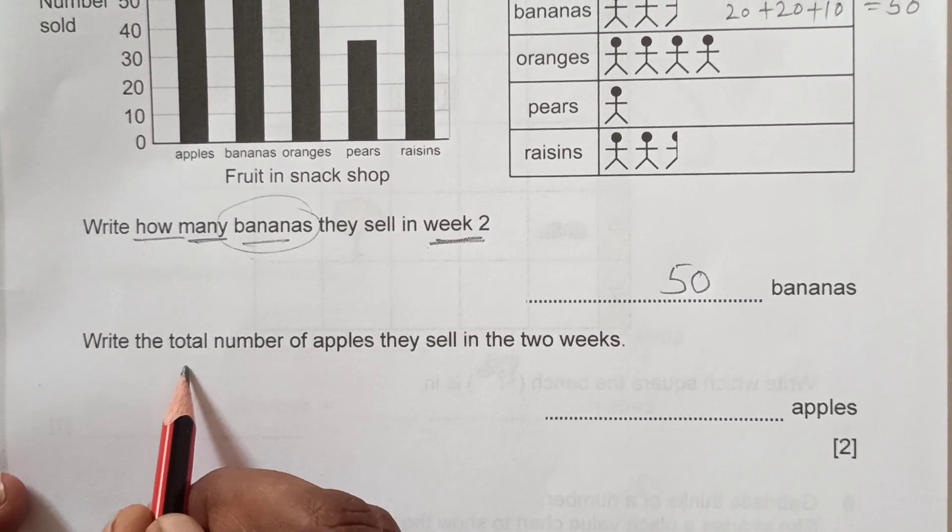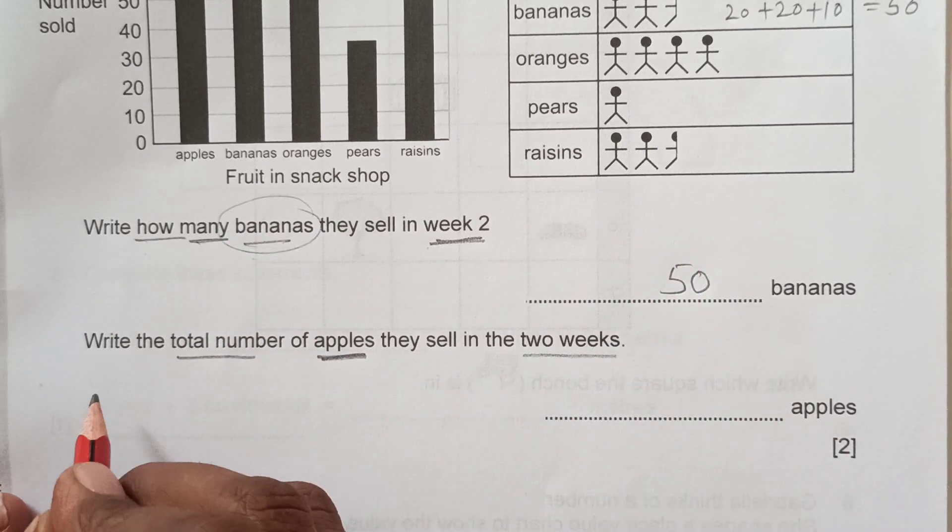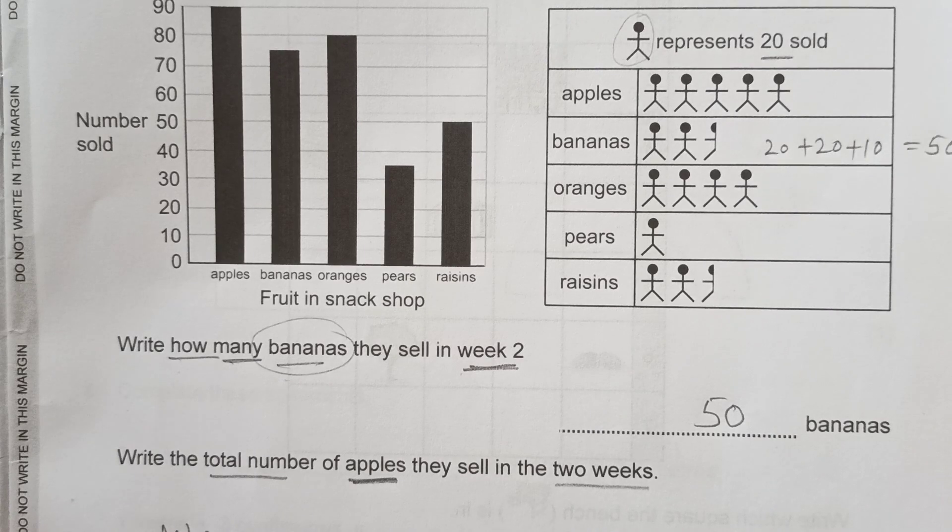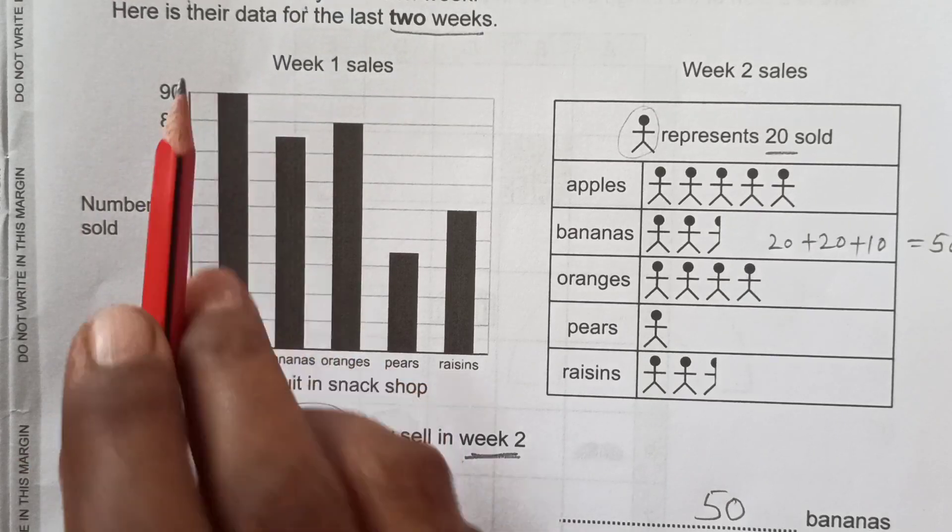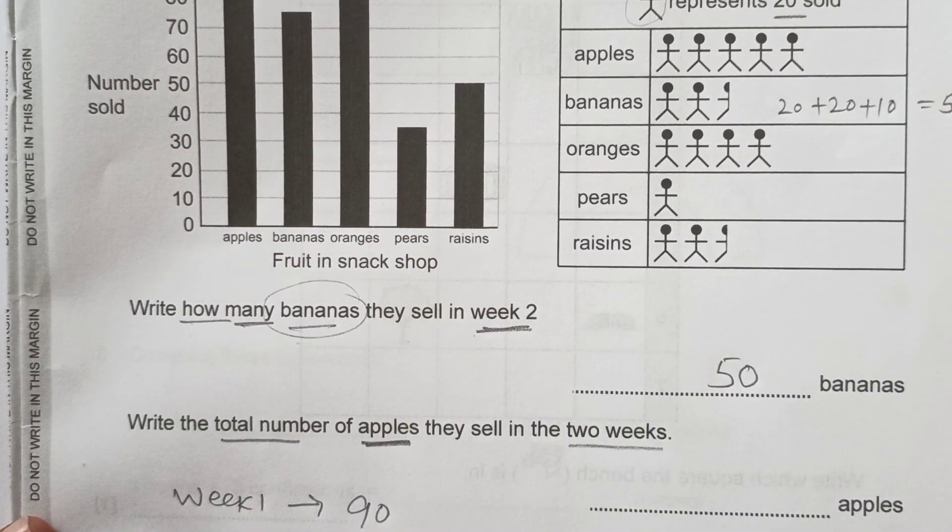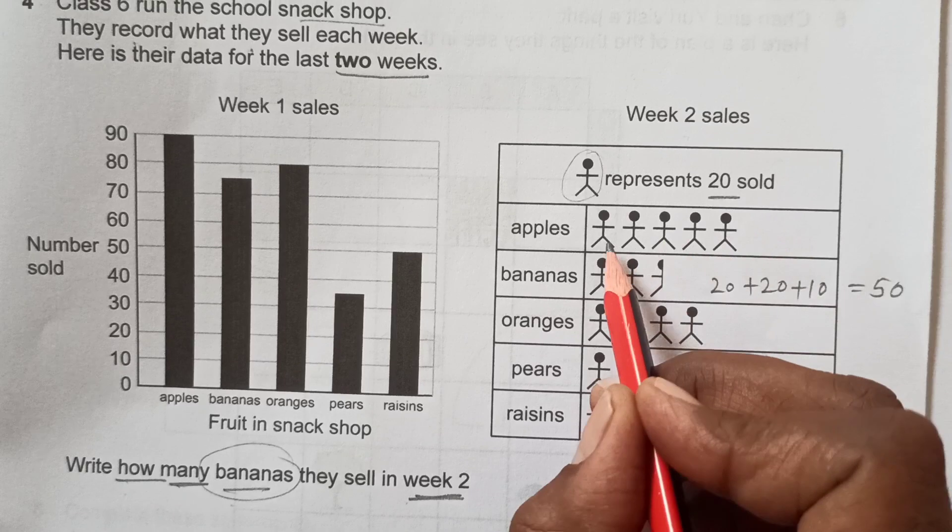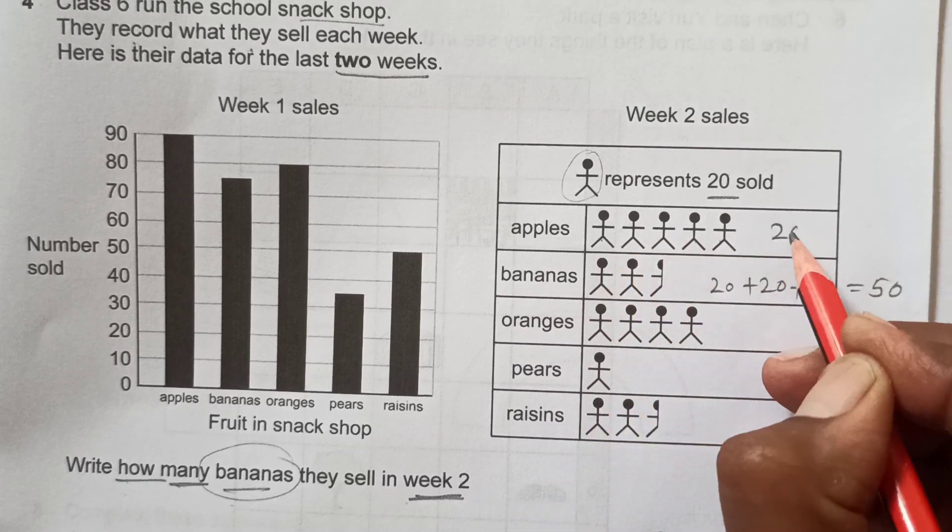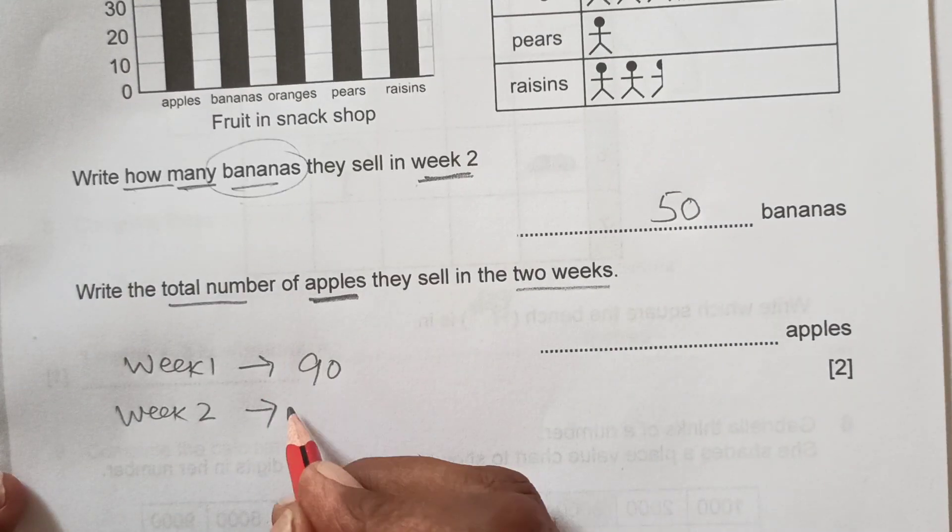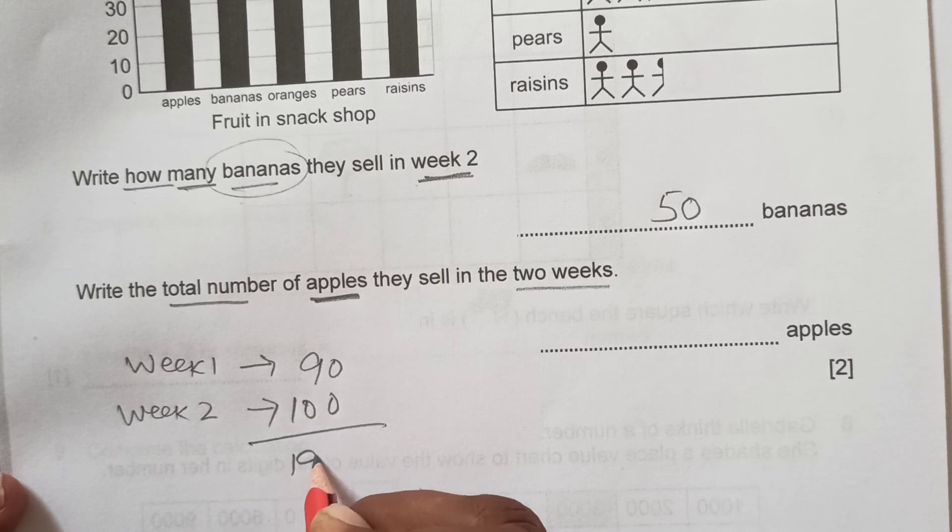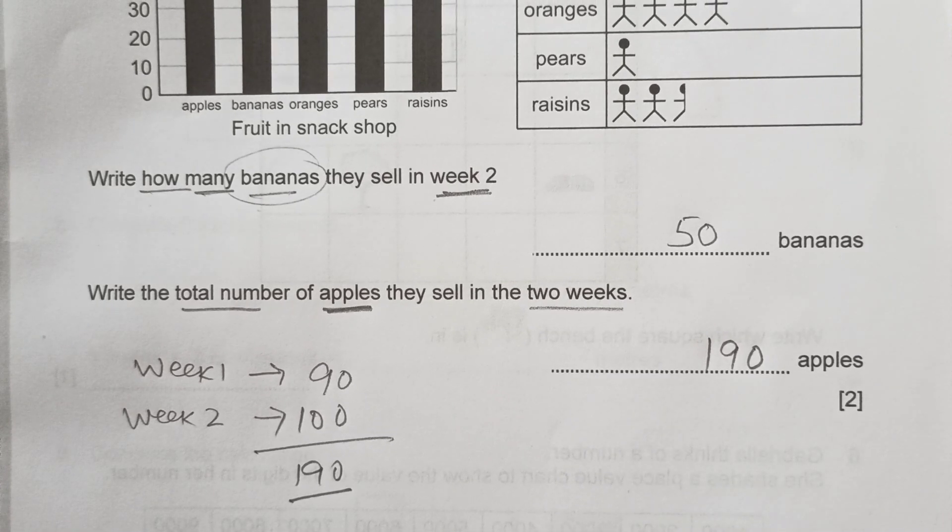Now, write total number of apples they sell in 2 weeks. In both weeks we are looking for number of apples. Week 1, how many apples they sold? Here you see 90, we have 90 here. And week 2, we are looking for apples. Apples are here, 1, 2, 3, 4 and 5. One of this figure represents 20 times 5, that is 100. Total is 190, add them together. 190 apples were sold in 2 weeks.